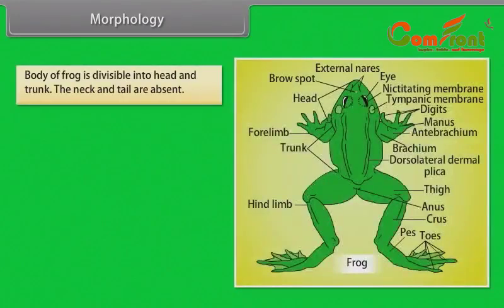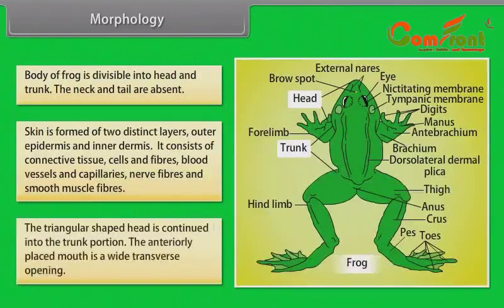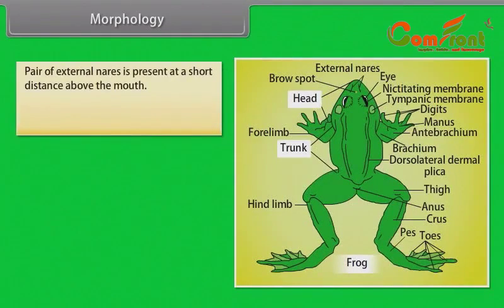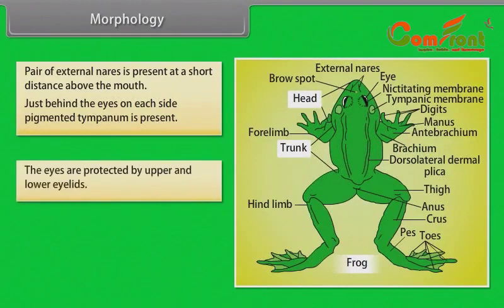Morphology: The body of a frog is divisible into head and trunk; neck and tail are absent. Skin is formed of two distinct layers — outer epidermis and inner dermis — consisting of connective tissue cells and fibers, blood vessels, capillaries, nerve fibers and smooth muscle fibers. The triangular shaped head continues into the trunk. The anteriorly placed mouth is a wide transverse opening. A pair of external nares is present above the mouth. Just behind the eyes on each side, a pigmented tympanum is present. The eyes are protected by upper and lower eyelids.